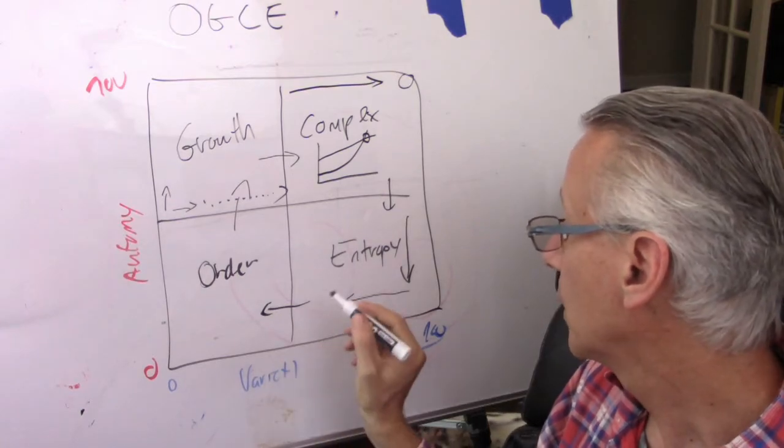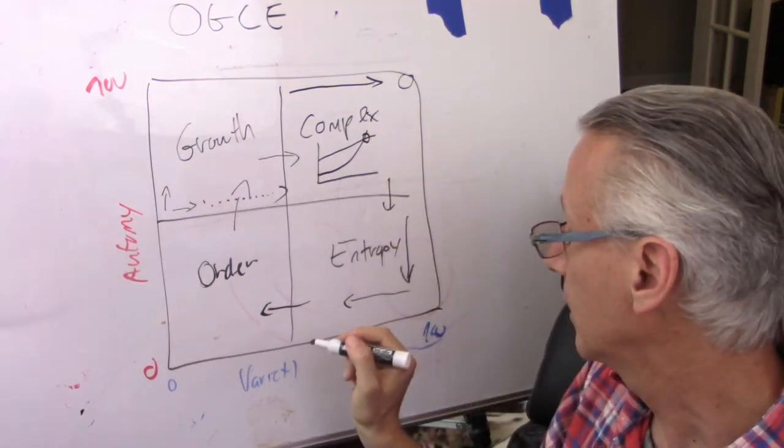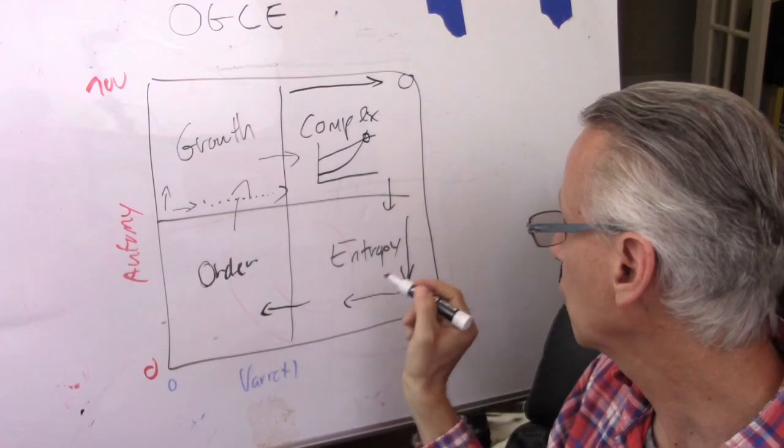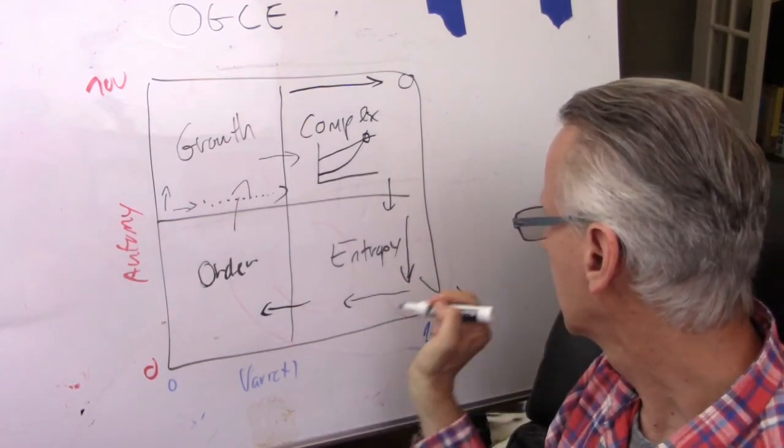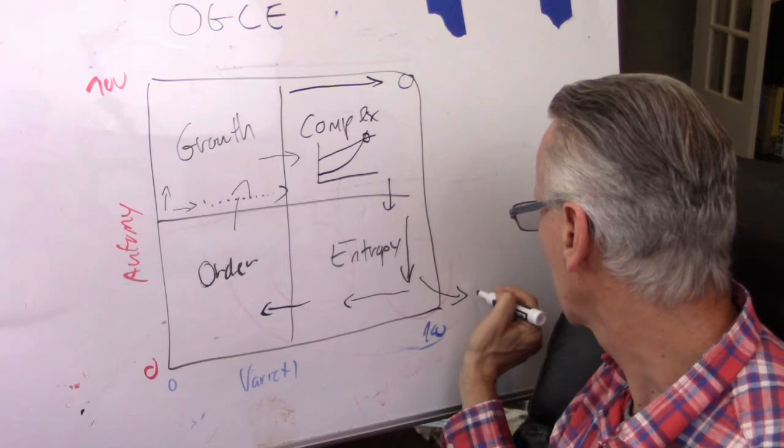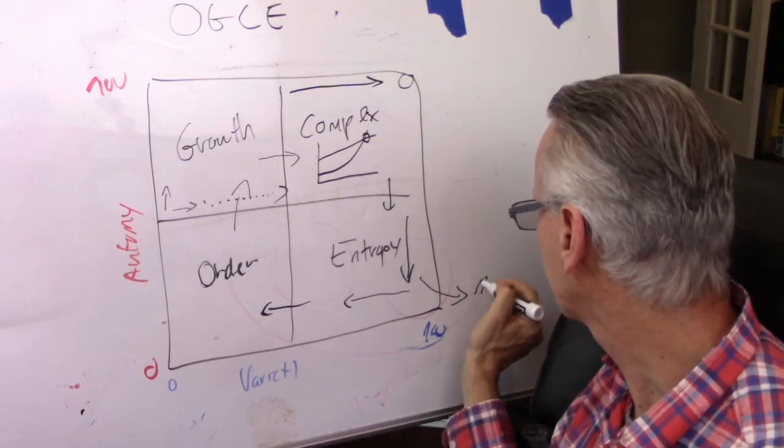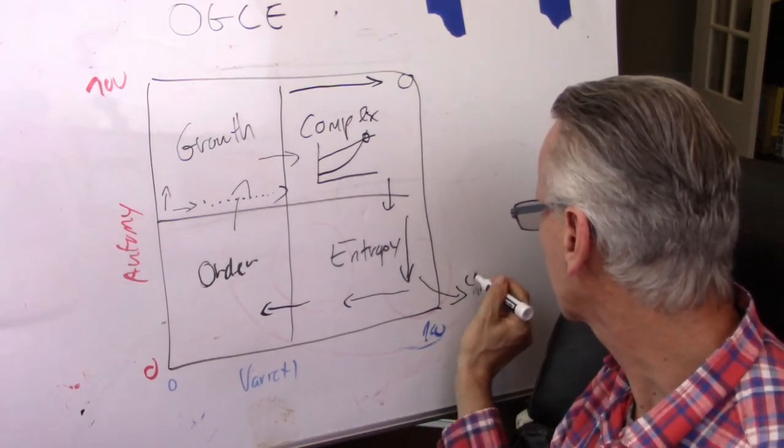Or, I went too much in complex, and the entropy is happening too fast, and I actually exceed the life cycle, which means that I'm dead. Or chapter 11, let's call it.